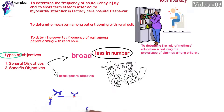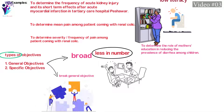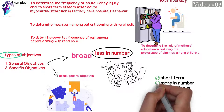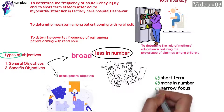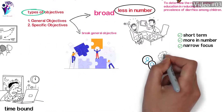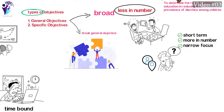A specific objective involves breaking down a general objective into smaller and logically connected parts. These are short-term, more in number, and narrow in focus. They should specify what the researcher will do in the study, where, and for what purpose.